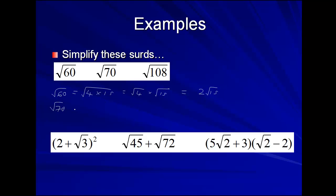Root 70. 4. Well, 4 doesn't go into 70, does it? It's 17 and a half, so that's no good to us. 4 times 17 and a half doesn't help. What else could we have a look at then? 9, no. 16, no. 25, no. 36, no. So actually, this one's already in its simplest form.